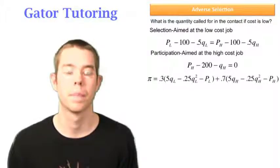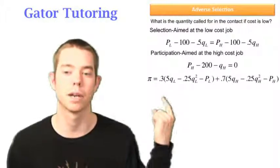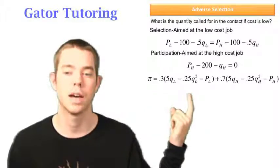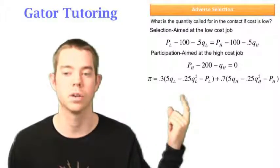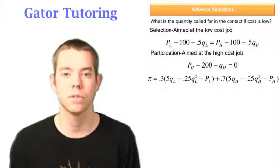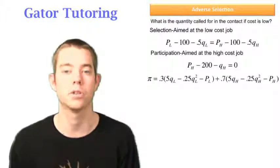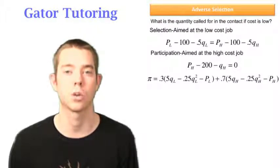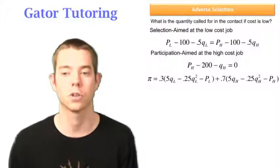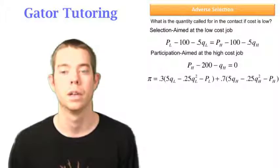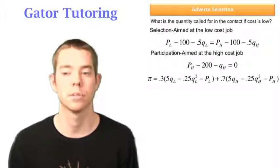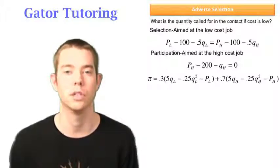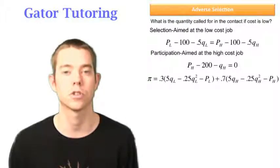Well, now we need to write profit. Remember, profit is the probability we're going to have a low-cost job times the value, the total surplus, of that low-cost job. Well, our value function was 5Q minus .25Q squared. So when it's a low-cost job, we're going to order a lot of units, or QL. And then the cost to us is the contract payment, or PL. 70% of the time, we're going to have a high-cost job, so we're going to order a lot less, or QH. And the cost to us is that contract payment, PH.